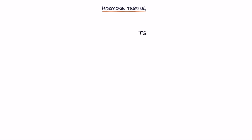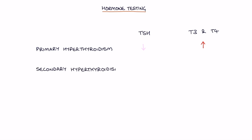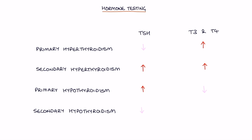To summarise the TSH and thyroid hormone levels, T3 and T4: in primary hyperthyroidism there's a low TSH and a high T3 and T4; in secondary hyperthyroidism there's a high TSH and a high T3 and T4; in primary hypothyroidism there's a high TSH and a low T3 and T4; and in secondary hypothyroidism there's a low TSH and a low T3 and T4.